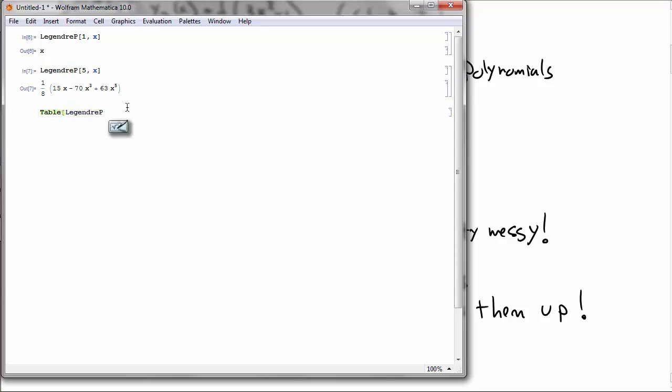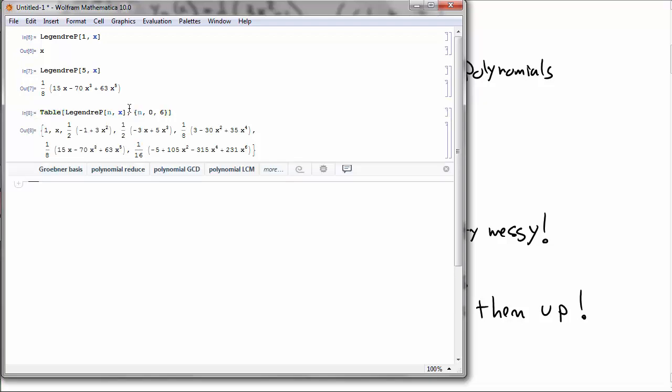Or you can make a table of the Legendre polynomials for any n, say from n equal to 0 to, I don't know, 6. And here are the first six Legendre polynomials.